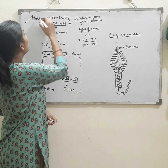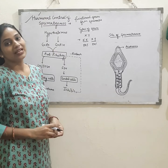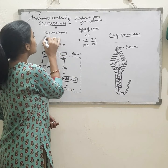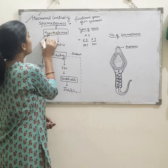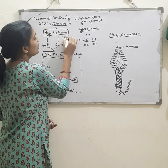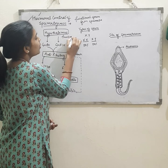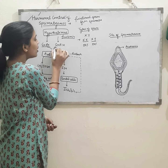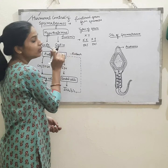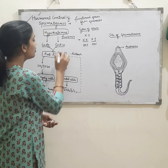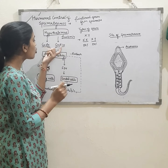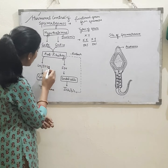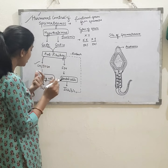So which hormones are responsible for spermatogenesis? Firstly, the hypothalamus, which is a part of the forebrain, releases gonadotropin releasing hormone and gonadotropin releasing inhibiting hormone. These hormones act on the anterior pituitary, and from the anterior pituitary two hormones are released.